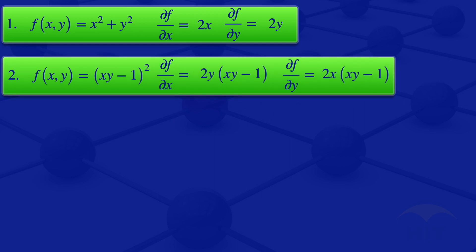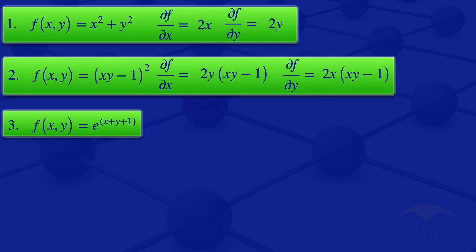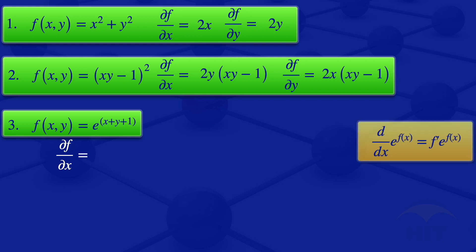I now move on to question 3, where f(x, y) = e^(x + y + 1). For the partial derivative of f with respect to x, we treat y as if it's a constant. We know that the derivative of e^(f(x)) is f′(x) times e^(f(x)). Differentiating the exponent (x + y + 1) with respect to x gives 1, so the result is 1 times e^(x + y + 1), which is simply e^(x + y + 1).